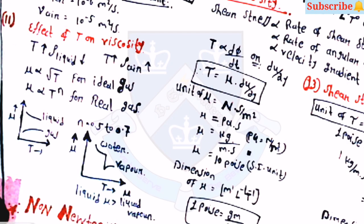Regarding the effect of temperature on viscosity: as you increase temperature, the dynamic viscosity of a liquid decreases, while for air with increasing temperature the viscosity increases. Mu is proportional to the square root of T for ideal gas, and mu is proportional to T-raised-to-n for real gas.